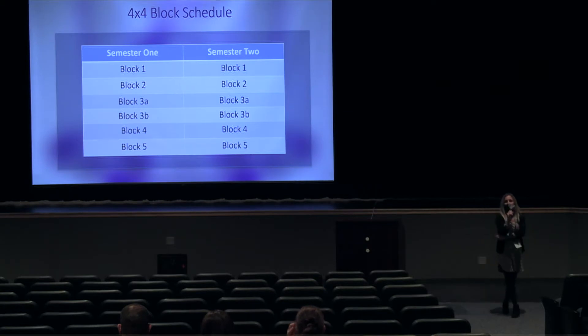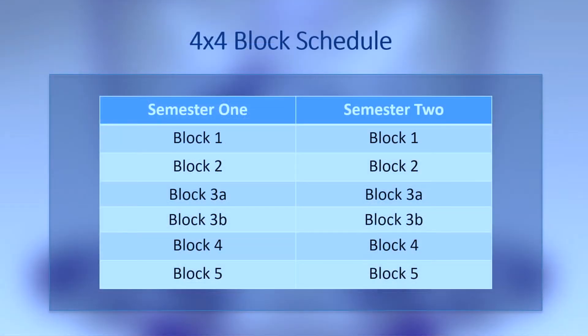Sterling operates under a four-by-four block schedule. This is a little different than, say, an eight-period day or a rotating block schedule. We have two semesters — we're actually about halfway through our first semester right now. One semester runs from the beginning of the school year until the end of January, and the other from the end of January through the end of the school year. Each semester is broken into four academic blocks, and then what we call the middle-of-the-day block — 3A and 3B — where there's lunch during one of those blocks and then an opportunity either for a study hall or an additional credit-bearing course.